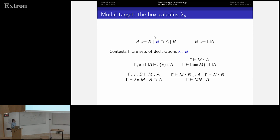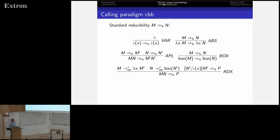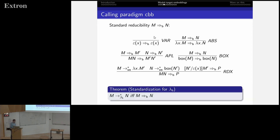As to types in this target: implications have box types, and implications are required to have this modal type in the antecedent. Contexts consist only of declarations where all variables are declared with the modal type. We can also define standard reducibility. In the interesting rule, the function reduces to a lambda, the argument evaluates to a lambda, and the argument evaluates to a box. There is a standardization theorem for this system.